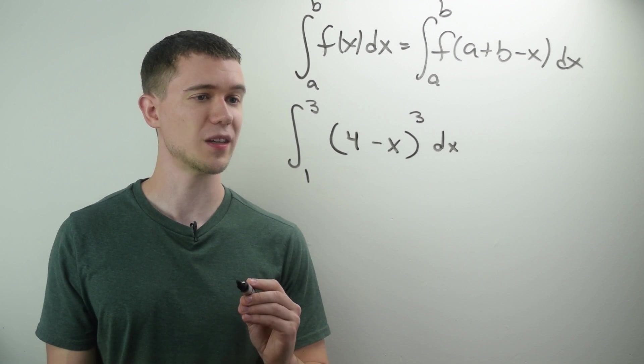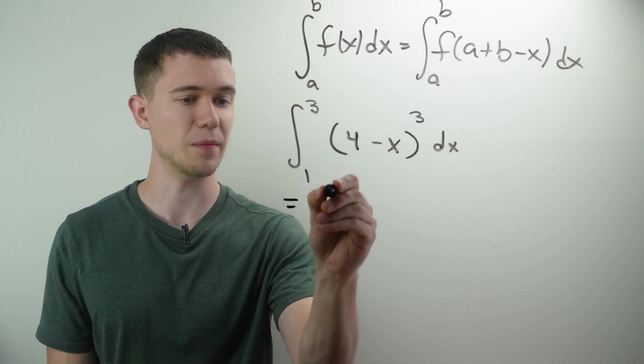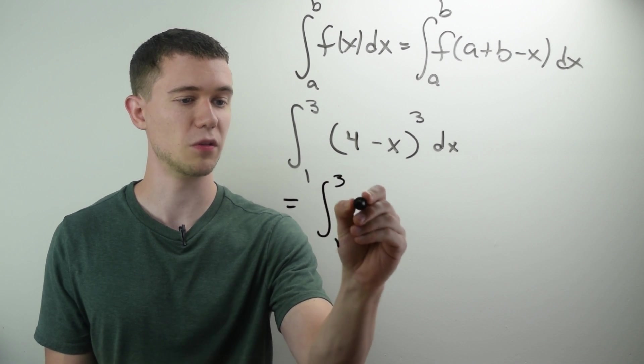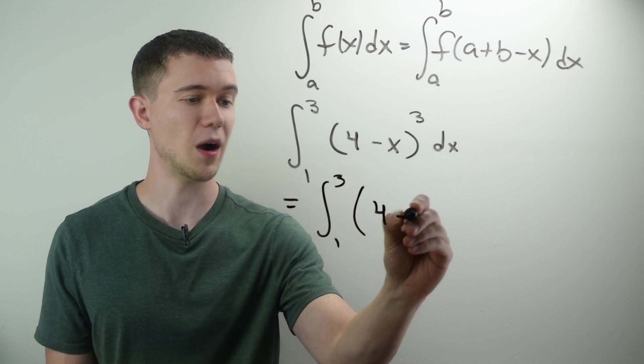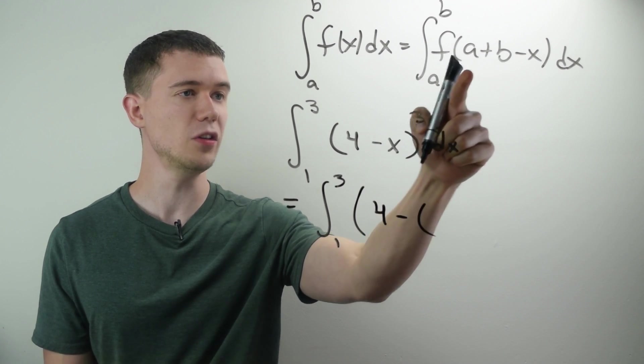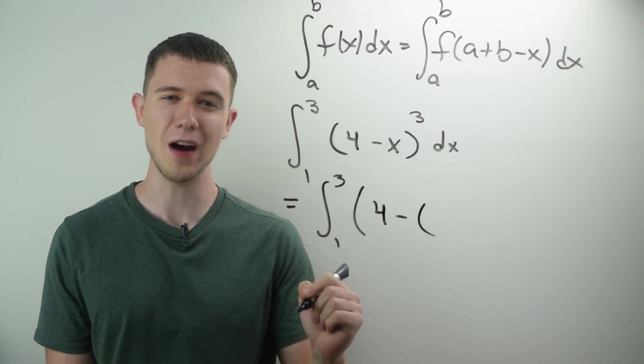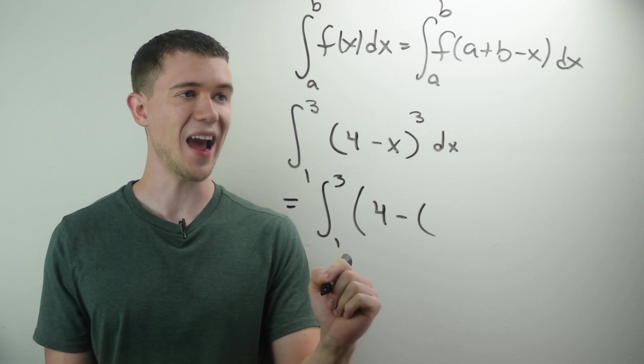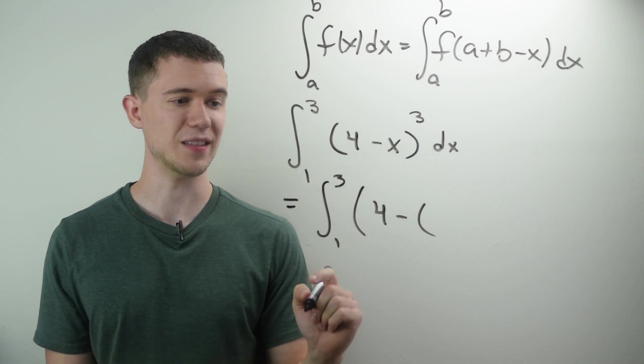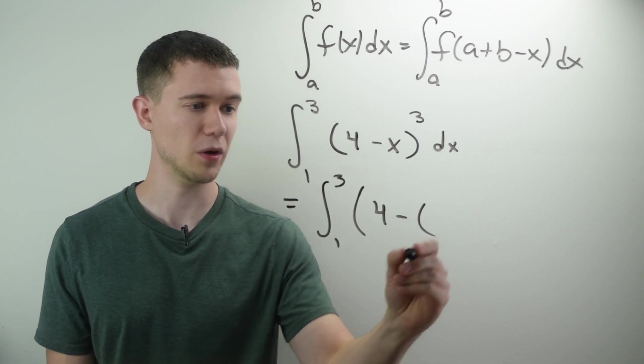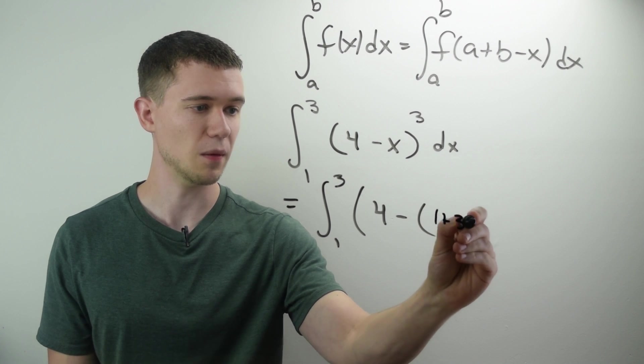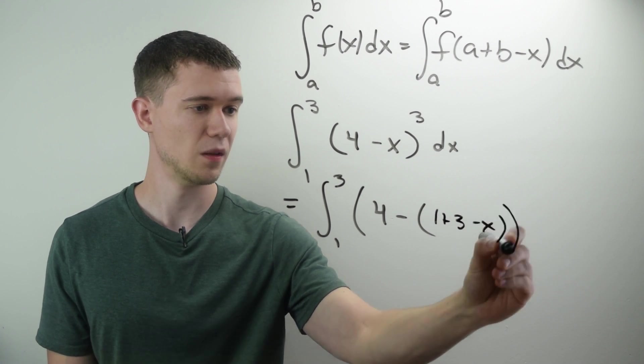Well, this trick says that this should be the same as the definite integral from 1 to 3 of 4 minus. And what do I do? I actually evaluate x. I evaluate this function at a plus b minus x. So instead of x, I'm going to put a plus b minus x.